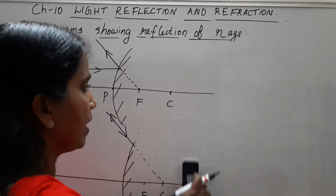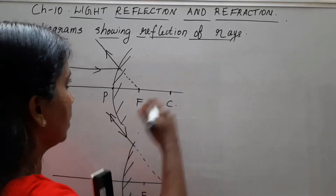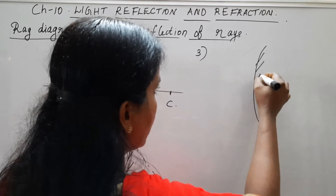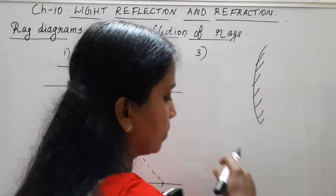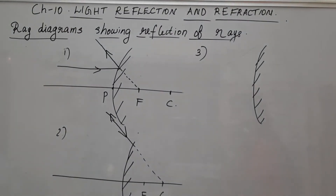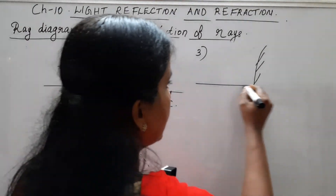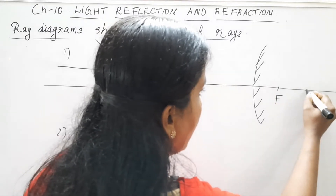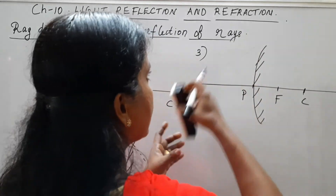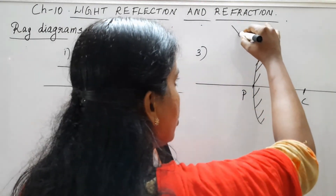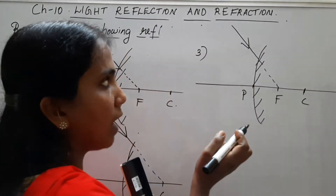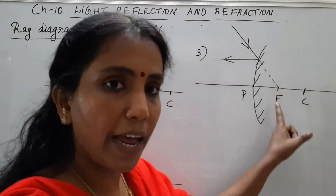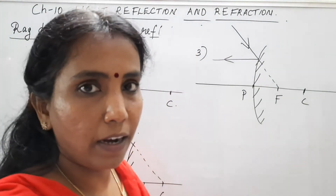The third case for the convex mirror is when the incident ray is directed towards the focus. Here we have F, C, and P. The incident ray comes directed towards the focus. In that case, the reflected ray will be parallel to the principal axis. When the incident ray is directed towards the focus, the reflected ray will be parallel to the principal axis.